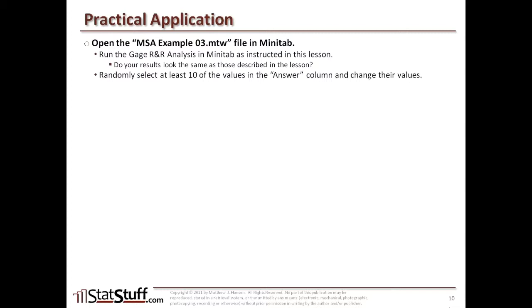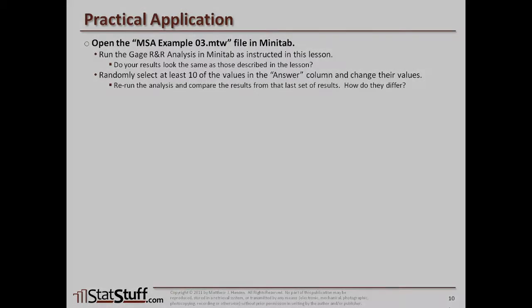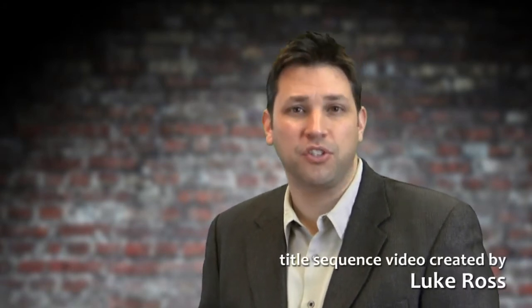Then try to randomly select at least 10 of the different values in the answer column and change those values to see what results you get. Rerun the analysis and compare the results to see if there are any differences and how you might interpret them, given how we've shown interpreting the session window and graphs window contents. That wraps up this lesson. Check out statstuff.com for more resources. I'm Matt Hanson, thanks for watching.